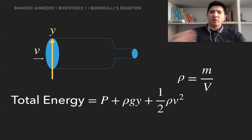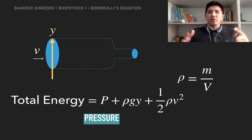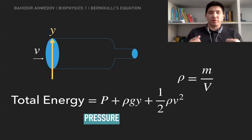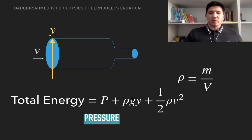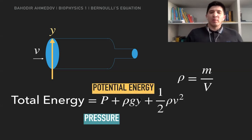The total energy is the sum of three terms. What do these terms mean? The first term is the pressure — basically how the particles of your fluid are forcing each other. The pressure is proportional to the force. The second term, rho·g·y, if you look at rho as the mass and y as the height, this formula becomes like mgh, which is the formula for potential energy. So the second term is the potential energy.